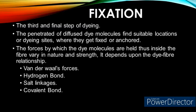The four types of dye-fiber bonds are: number one, van der Waals forces; number two, hydrogen bond; number three, salt linkage; and number four, covalent bond. Regarding relative strength: van der Waals force has a relative strength of 1, hydrogen bond has a relative strength of 3, salt linkage or ionic bond has a relative strength of 7, and covalent bond has the highest relative strength of 30.